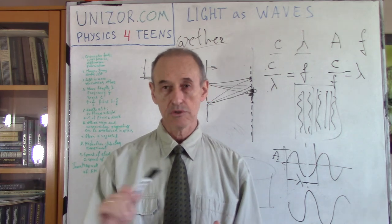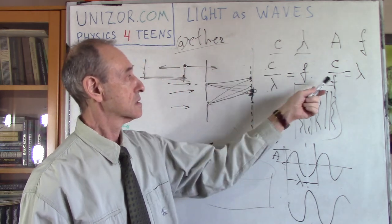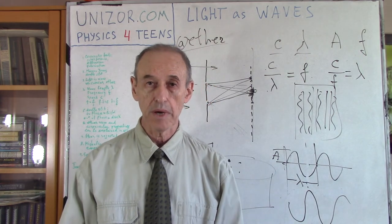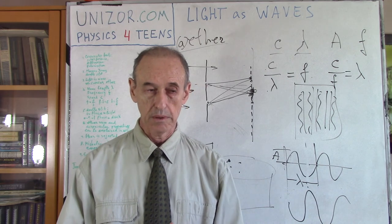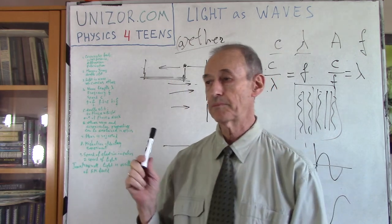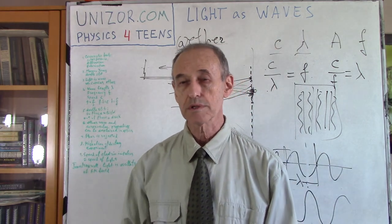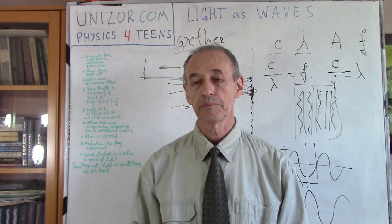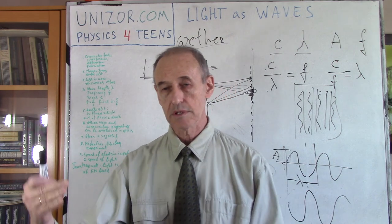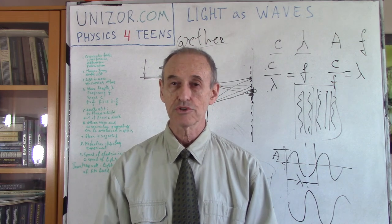That basically completes my explanation of the nature of light as wave theory. There are further calculations we can do — especially considering the major characteristics of light and how much energy is carried by light — but that will be in other lectures. I suggest you read the textual part of this lecture on Unizor.com. Go to the Physics for Teens course, find Energy in the menu, and go to Energy of Light. That's where you'll find this lecture together with textual notes, which I recommend you read. Thank you very much, and good luck!